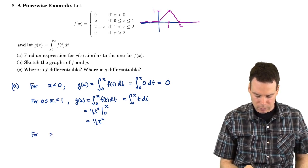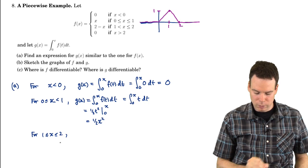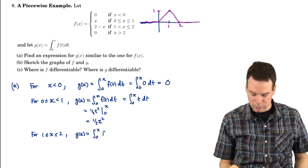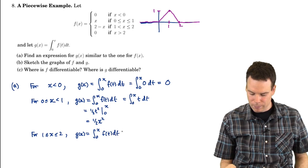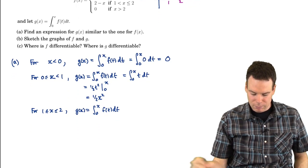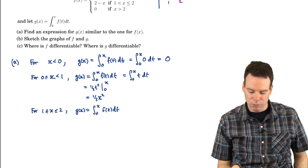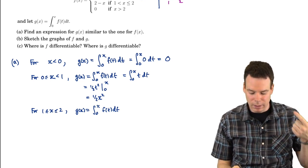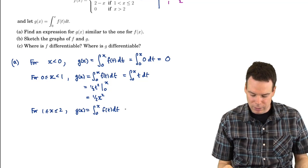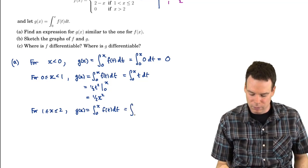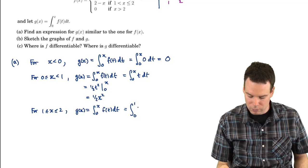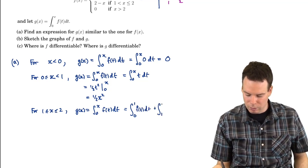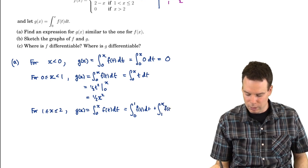What about for x between 1 and 2? Well, G of x is equal to the integral from 0 to x of F of t dt. Now if x is between 1 and 2, then our integral is going to go from 0 all the way out to 1, and then from 1 to x. And I have to split it up, because the function F is defined differently on those intervals. So I integrate from 0 to 1, and then I integrate continuing on from 1 out to x.